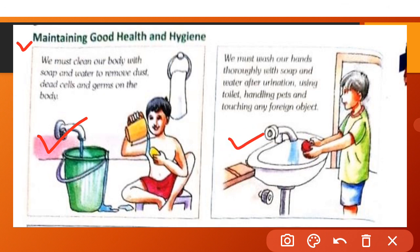We must wash our hands thoroughly with soap and water after urination, using the toilet, handling pets and touching any foreign object. Bahar se aane ke baad, ya toilet se aane ke baad, ya kisi pet ko touch karne ke baad, apne haath hume proper wash karna chahiye.